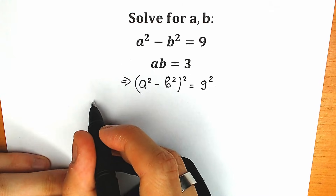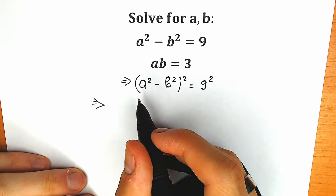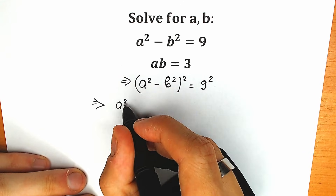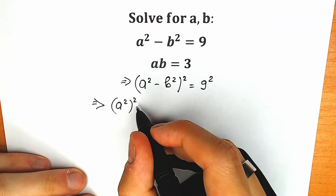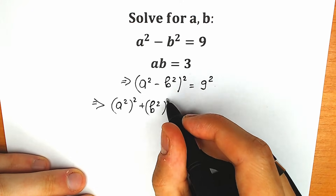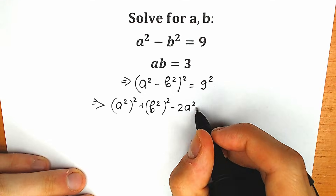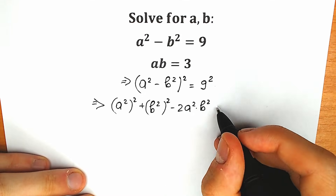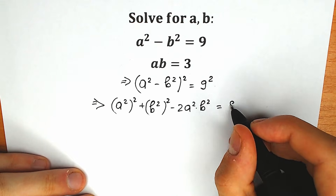Right now, let's expand this. I'm going to start on the left side because I need more space. So as a result, we have a squared to the second power, plus b squared to the second power, and minus 2·a squared times b squared — according to a basic school formula — and equal to 9 squared, which is 81.